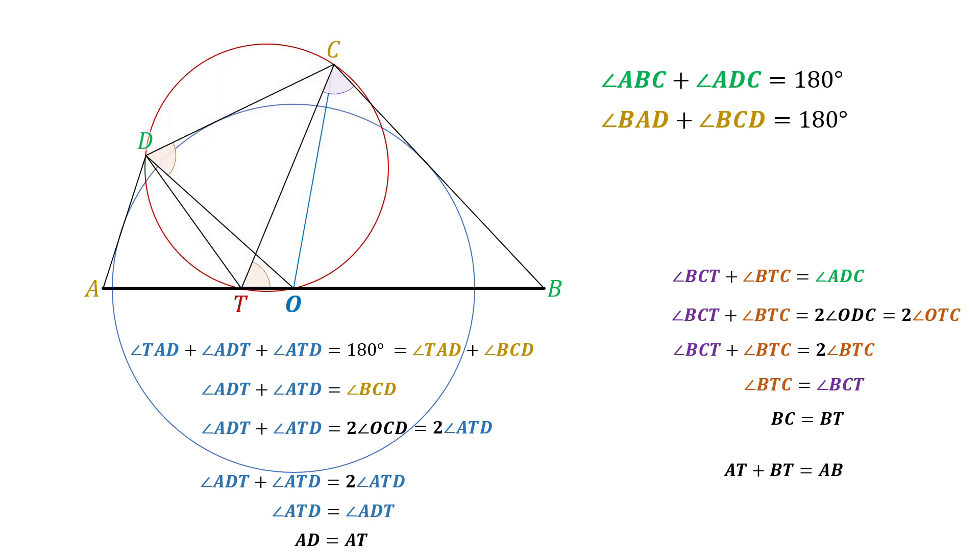From the diagram, we observe that AT plus BT equal AB. Therefore, we have the final solution, AD plus BC equal AB.